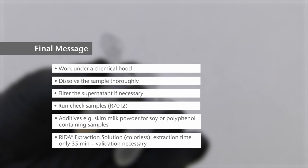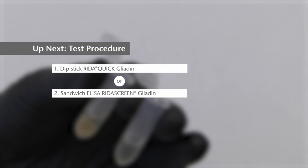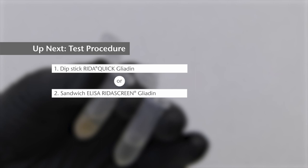Now you have learned the basics on how to extract samples with the cocktail patent. In the next videos you will see how the sample extract is analyzed with sandwich ELISA RIDASCREEN Gliadin or the dipstick RIDA QUICK Gliadin. Thank you for your time.